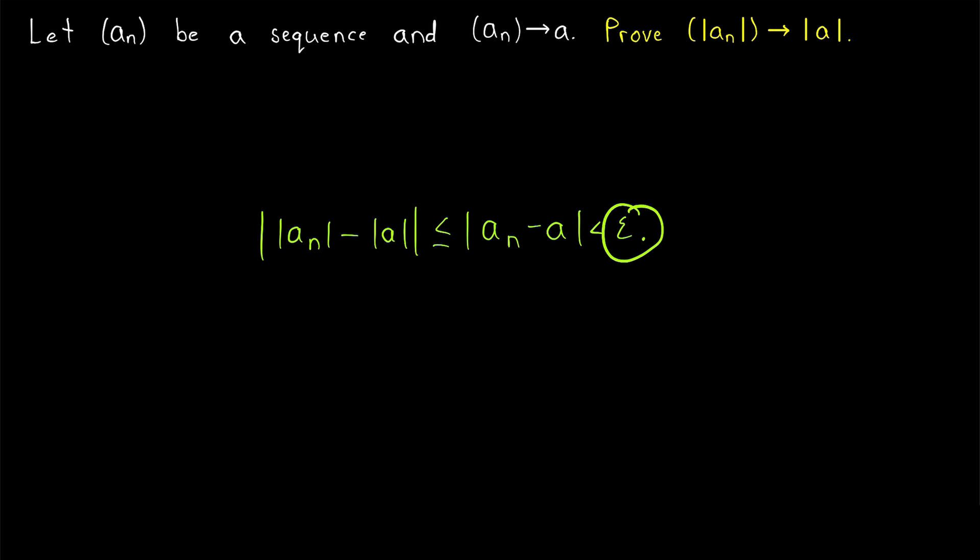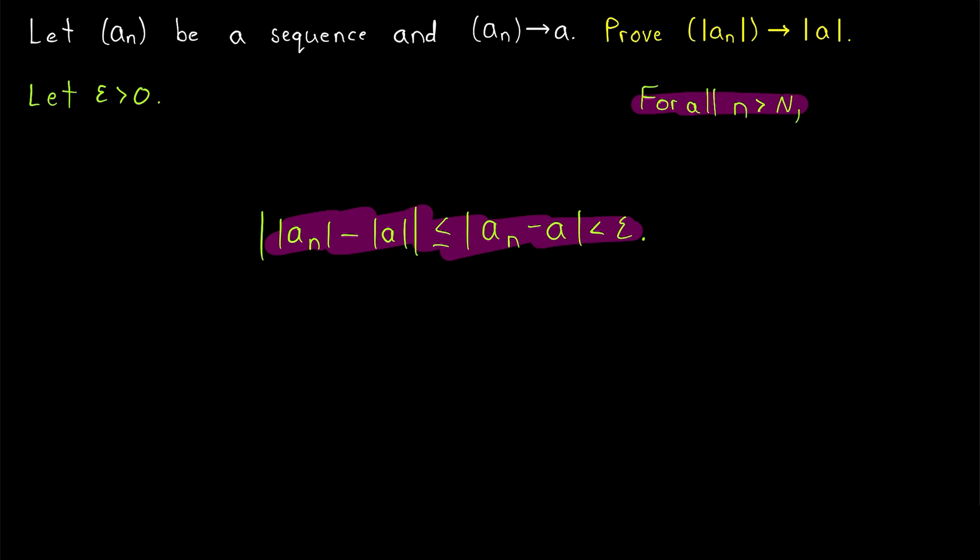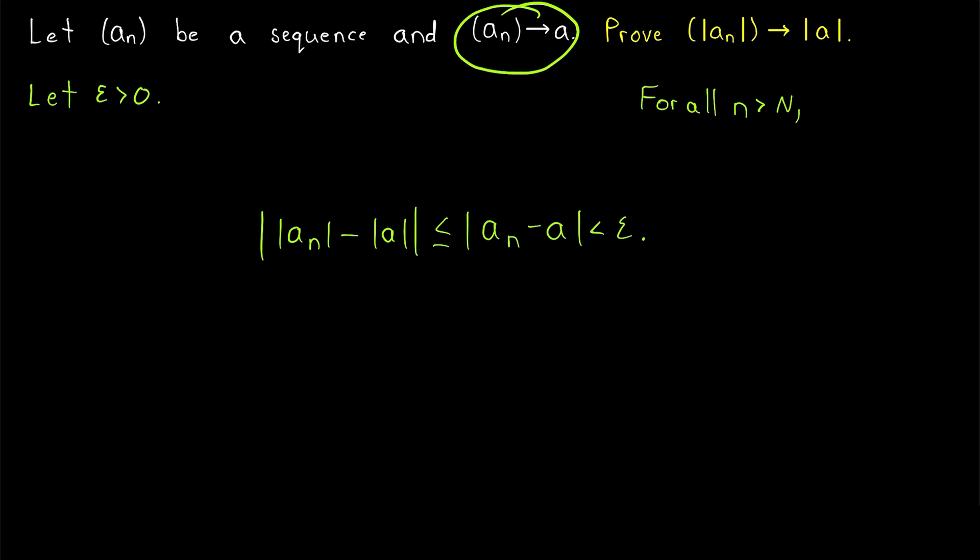We, of course, need to take an arbitrary epsilon greater than zero. As usual, before this string of inequalities, we would say for all N greater than big N, and we need to choose a big N that will make this work. We will get that big N from the fact that An converges to A.